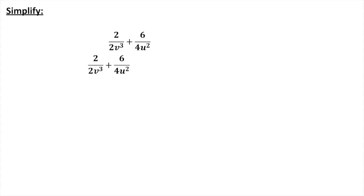So the very first thing I'm going to do is take these and reduce them. The 2s will cancel. That will be 1 over v cubed. The 6 and 4 will cancel. The 6 will become a 3, the 4 will become a 2. So let's rewrite that so that we can read it.